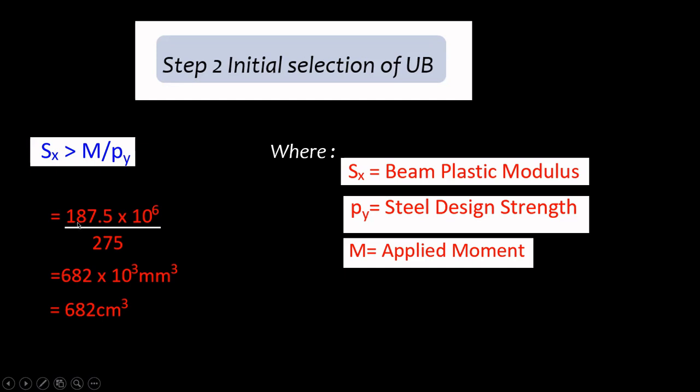So our moment was 187.5 kN·m. So here you have to be very careful with the units, because our PY is given in Newtons. So we have to convert this to Newtons, and again the value of section modulus in the steel table is given in centimeter cubed. So you can either convert this moment into centimeters, but it's easier to do the millimeters first. So I've multiplied 187.5×10³ to convert to Newtons, and another 10³ to convert to millimeters. If you divide this by 275, you get 682×10³ mm³.